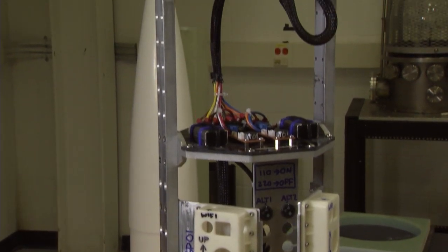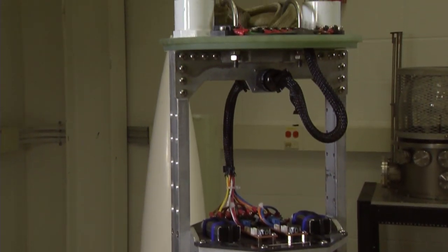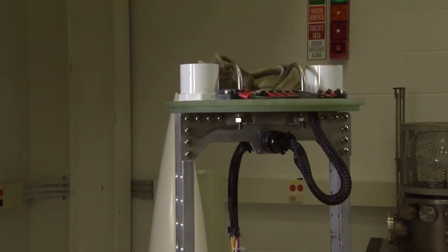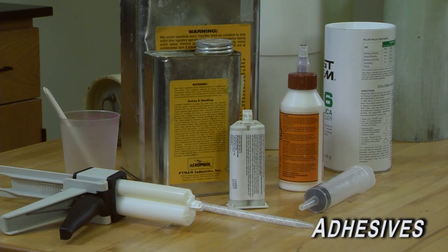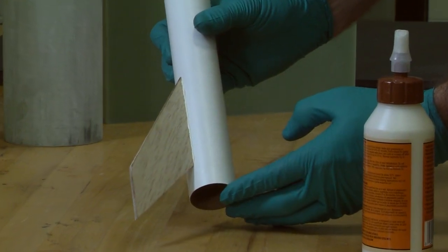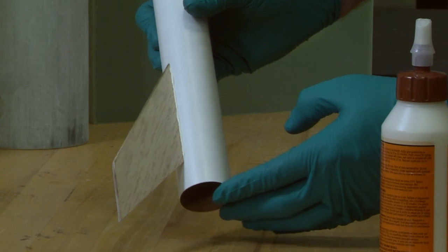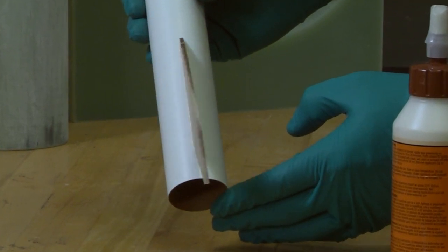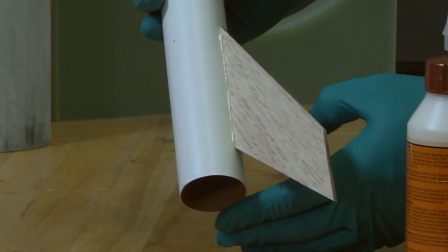When bonding any components in a high-power rocket, it's important to use the correct adhesives for the materials being bonded. For cardboard to cardboard, cardboard to wood, or wood to wood bonds, the best choice for adhesion is aliphatic glue, also known as wood glue. Wood glues wick into the fibers of the materials being joined, so surfaces should be clean and smooth sanded to a slightly rough texture for the best bond.